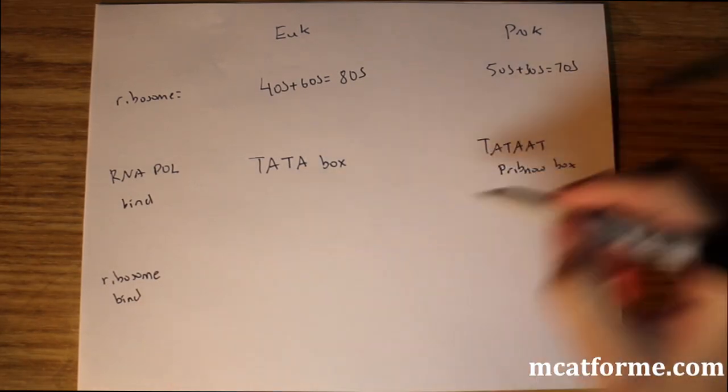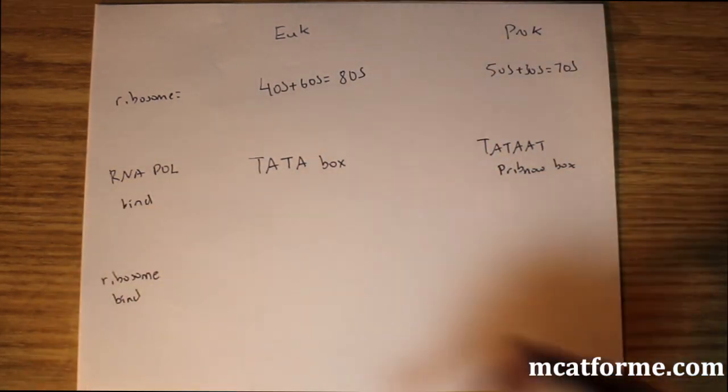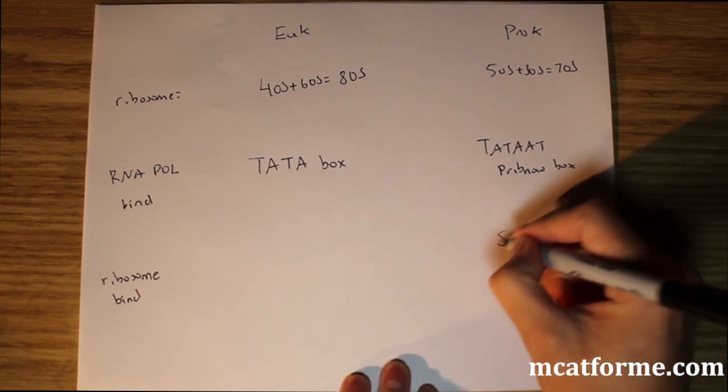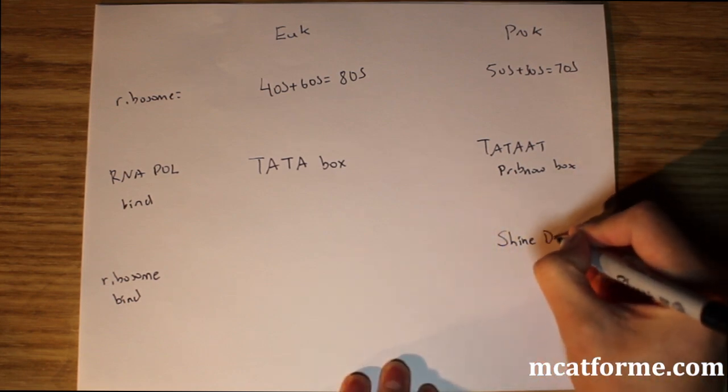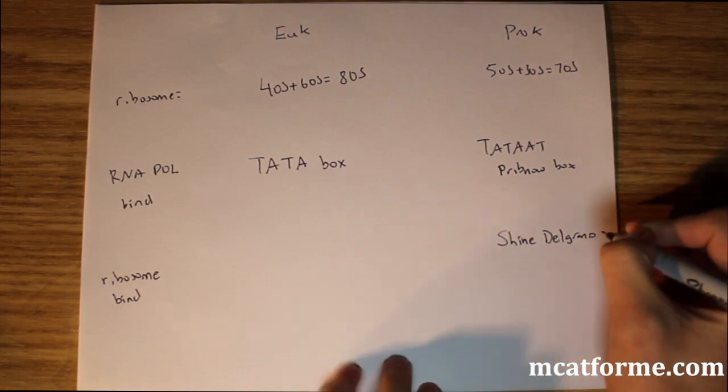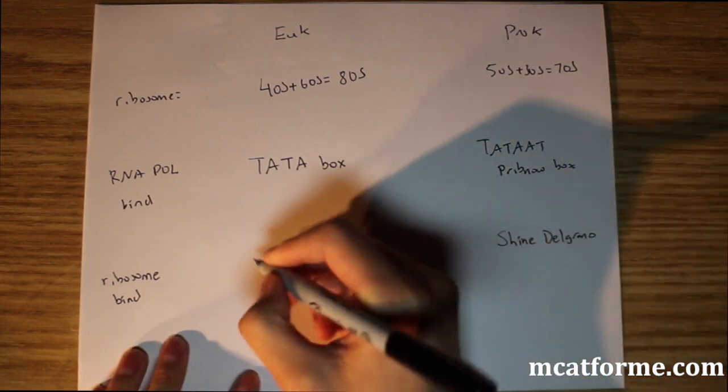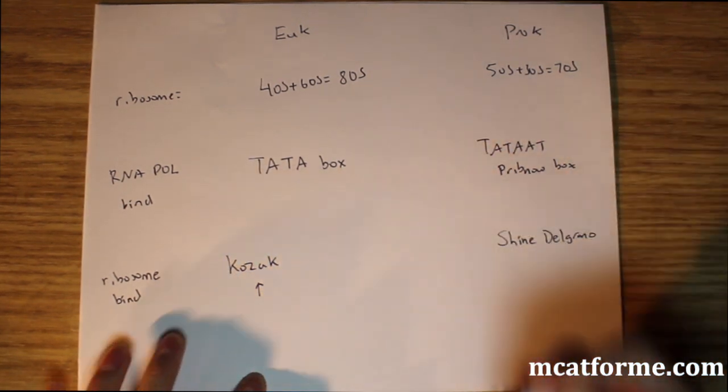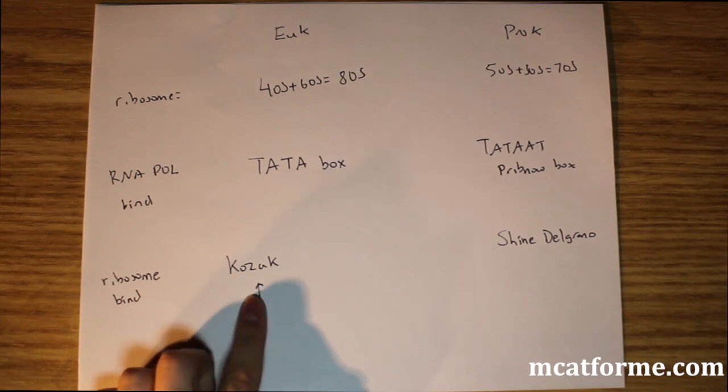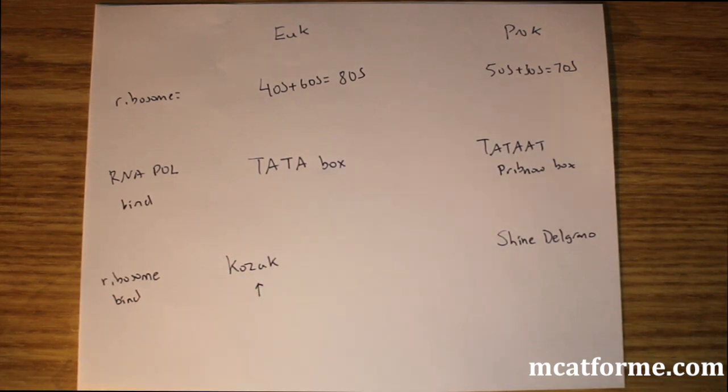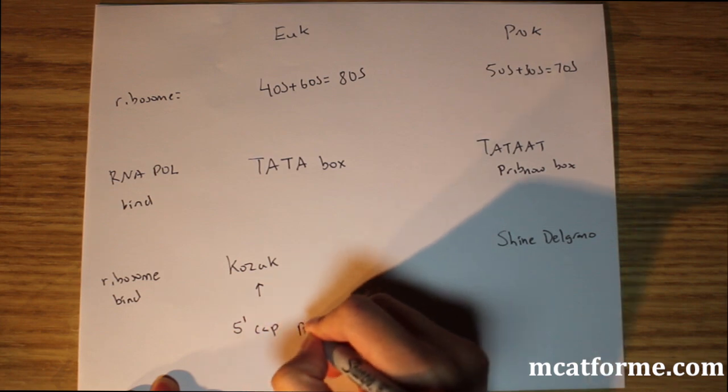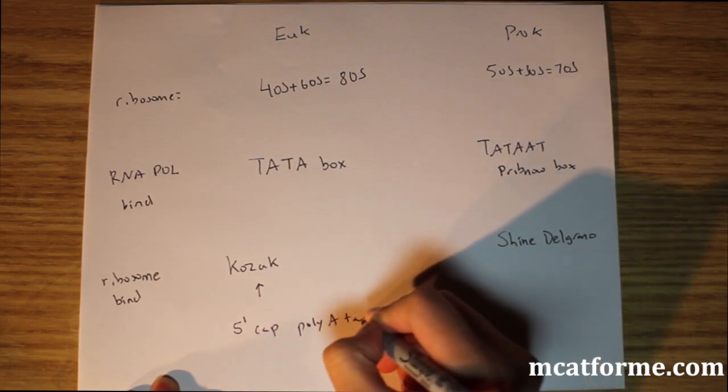In eukaryotes and prokaryotes, where does the ribosome bind? In prokaryotes, it's the Shine-Dalgarno sequence. In eukaryotes, it's the Kozak sequence. This one we'll probably never need to know—it's not very important. But we also have the 5' cap and the poly-A tail. This is very random.